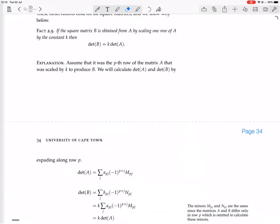Explanation. Assume that it was the pth row of the matrix A that was scaled by k to produce B, so it doesn't matter, any old row. Now we calculate determinant A and determinant B by expanding along row P. So we can expand along the row that we multiplied by k.